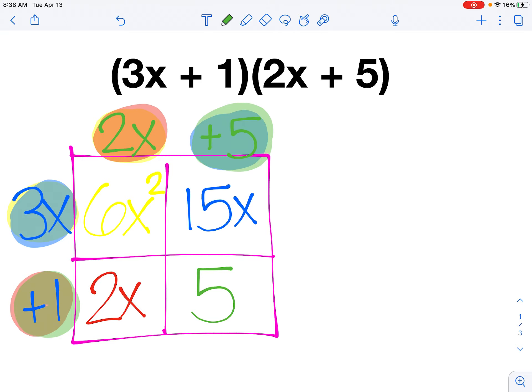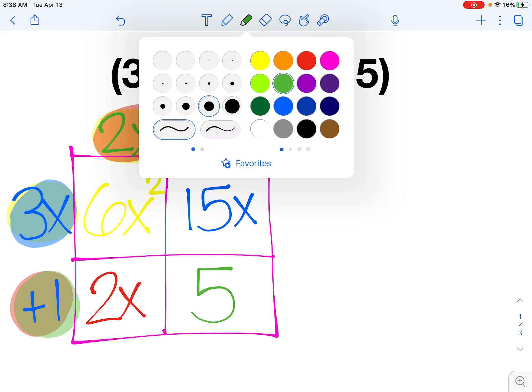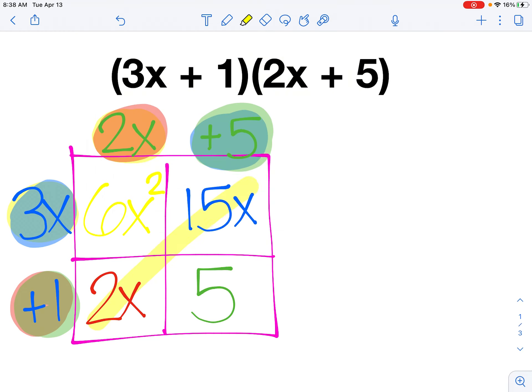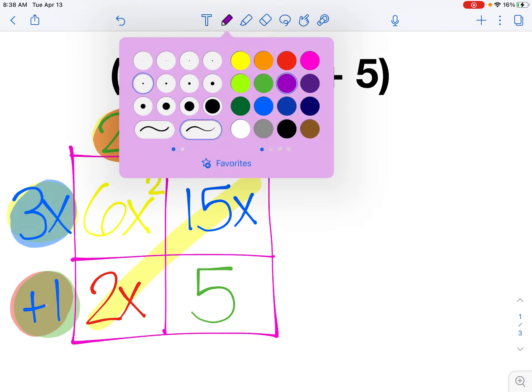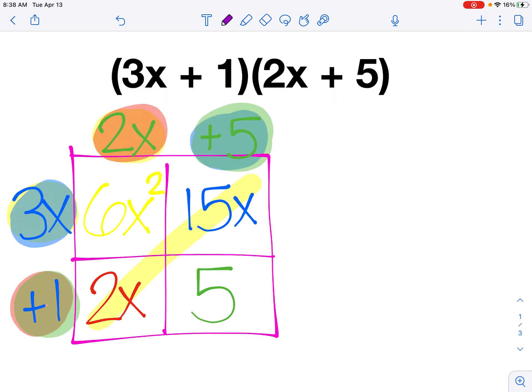Now at this point in the problem, before I write my final polynomial, I can notice that these two terms on the diagonal are the ones that I can combine. So I have a positive 2x and a positive 15x. I can combine those when I write my final answer. So my final polynomial would be 6x squared. 15 and 2 combined would be 17x. And then I would finish with a plus 5. So 6x squared plus 17x plus 5 is my final polynomial.